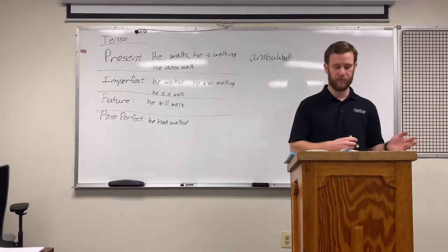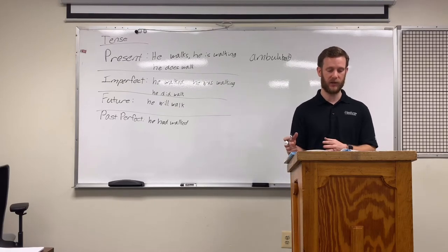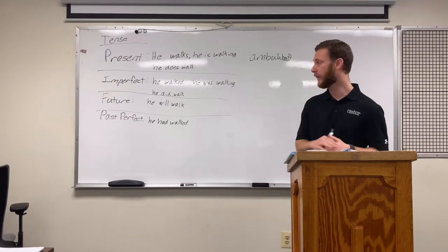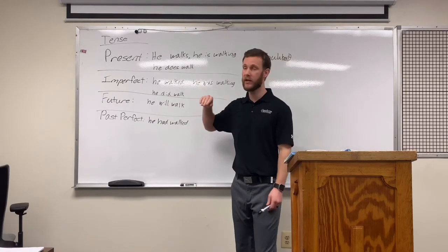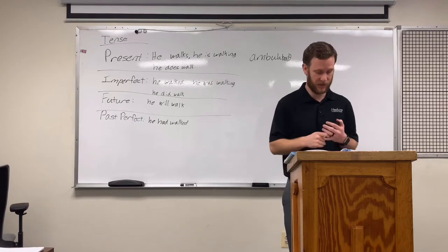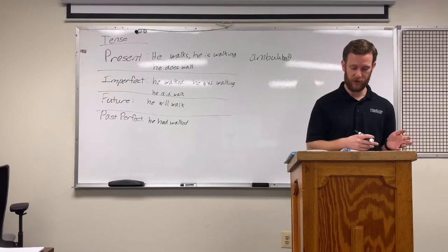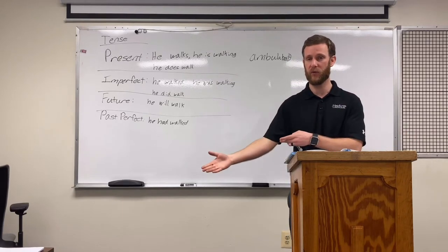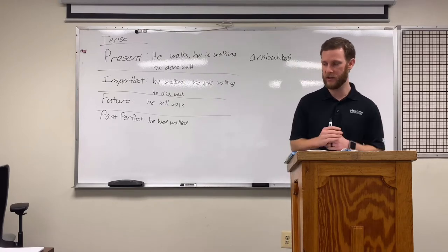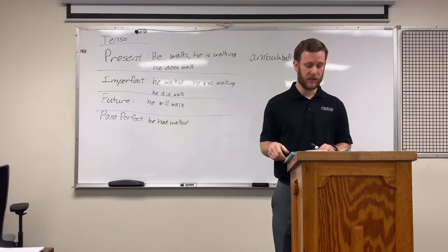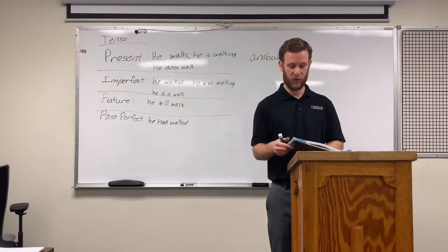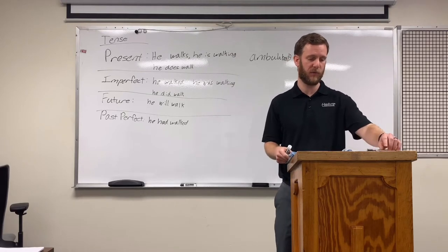Latin has another tense to show completed action, and you will learn about that later. Right now we're just dealing with present tense and imperfect — the closest thing Latin has to past tense. In Activity B you will practice with present and imperfect verb forms. In Activity C you will translate sentences into English, being careful to use the correct forms. We will not do Activity D — just Activity B and Activity C. If this is still confusing, we will get it down in the activities, and if you're still struggling, let me know.